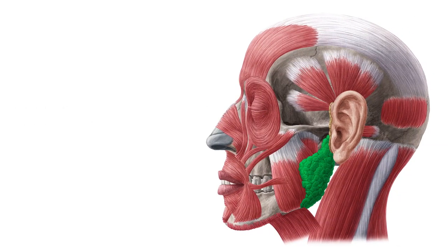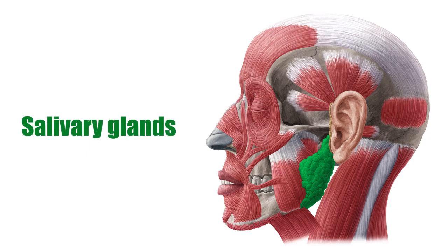Now on to the exocrine system. This includes the salivary glands, the sweat glands, and the prostate gland. The salivary glands are positioned in and around the oral cavity and secrete their salivary contents into the mouth to help keep the oral mucosa protected and lubricated, as well as to help in the initial stages of digestion during chewing so that food is ready for swallowing.